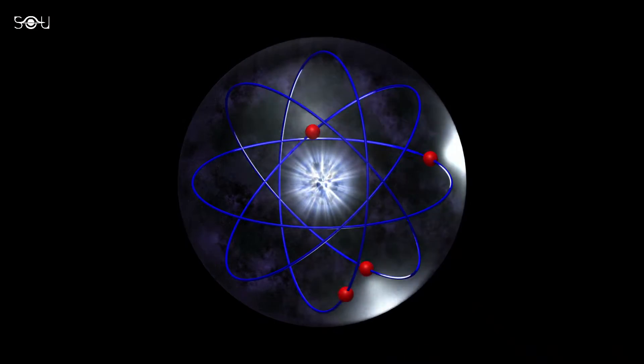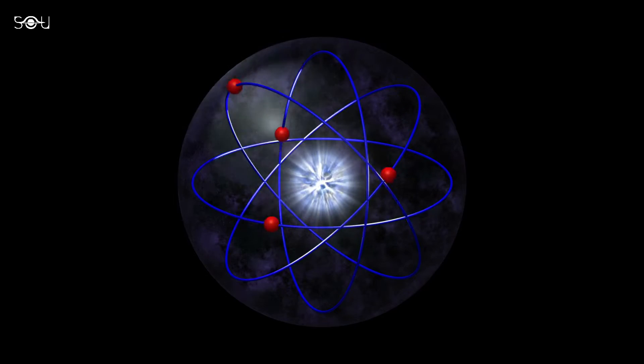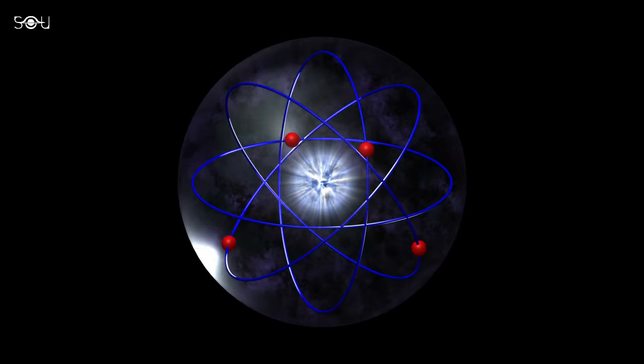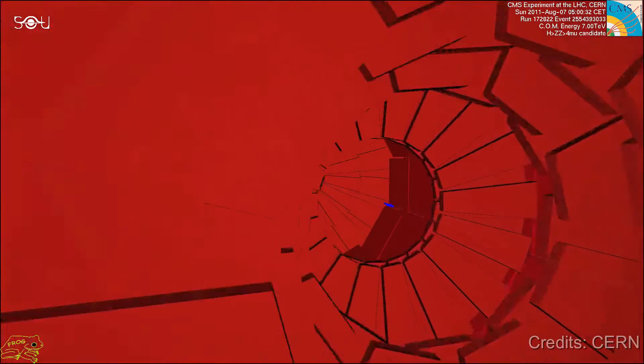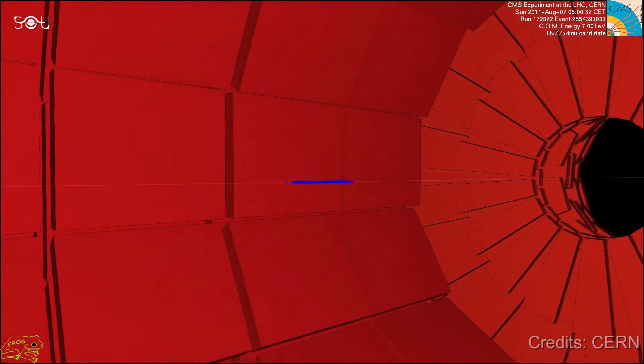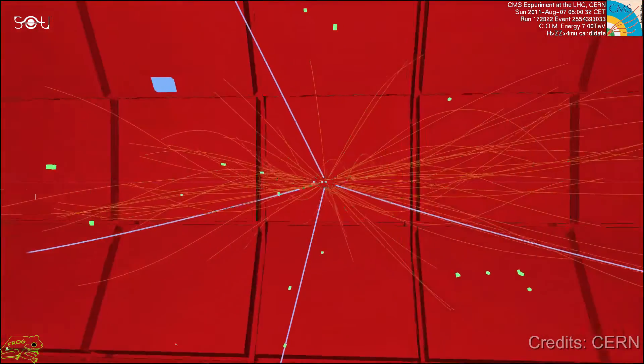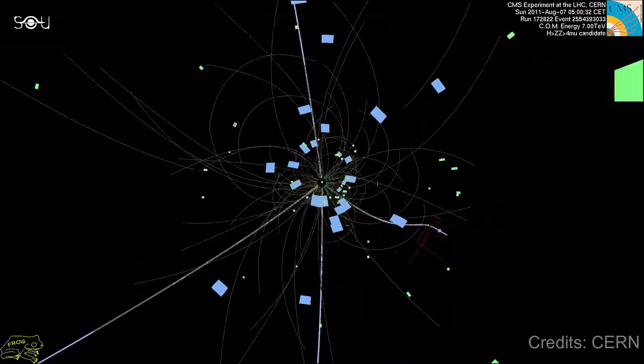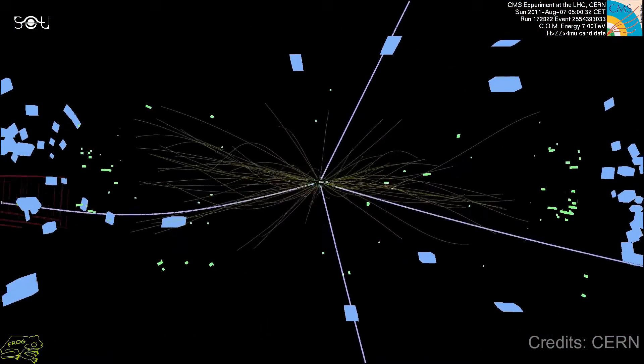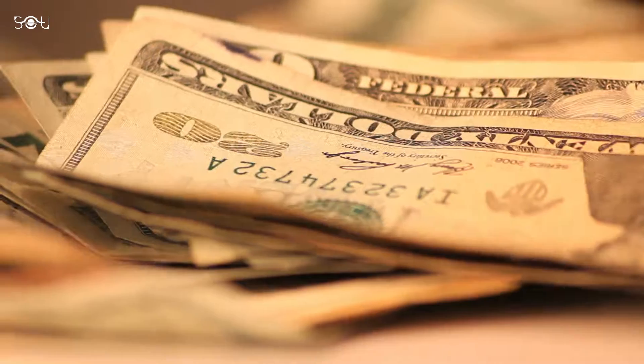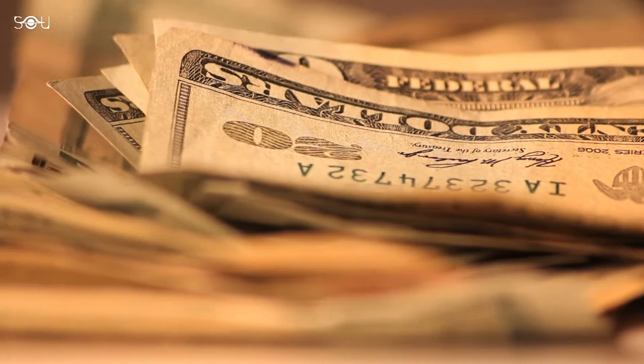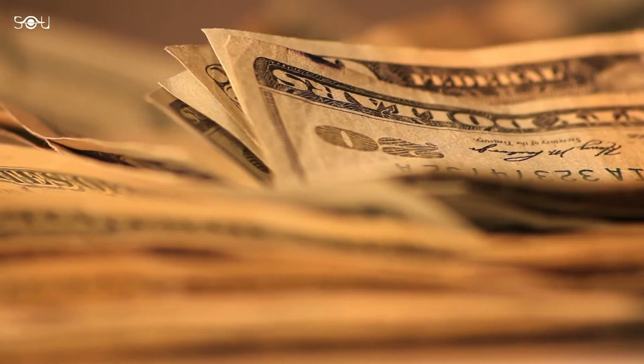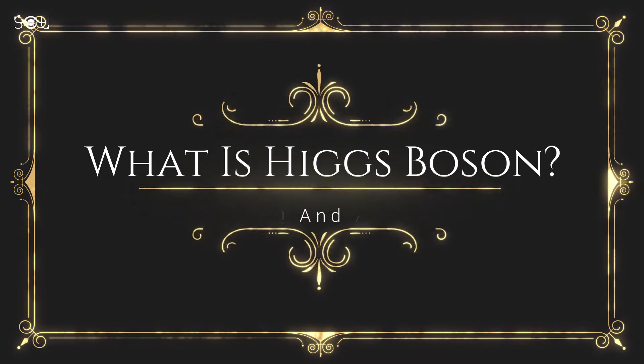In 1896, mankind knew of just one particle: the electron. Today we know of more than 200 elementary particles, the latest and most famous being the Higgs boson. But what is it really? Why did we spend 14 billion dollars on it? And why is it called the God particle? This is Q&A, and here is the answer to the question: What is the Higgs boson?